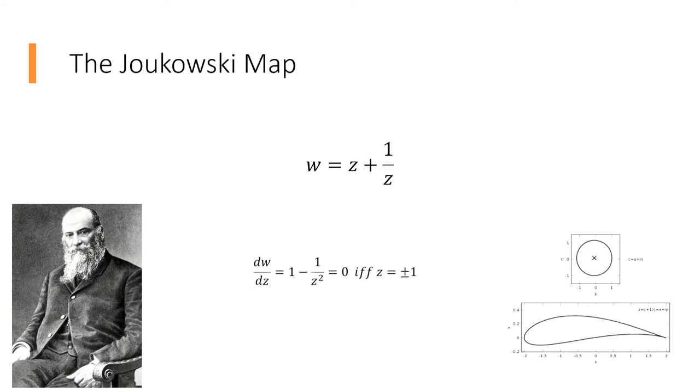Since dw by dz, which is 1 minus 1 over z squared, will equal 0 if and only if z equals plus or minus 1, the function is conformal, except at the point z equals plus or minus 1 or at 0 where the function is undefined.